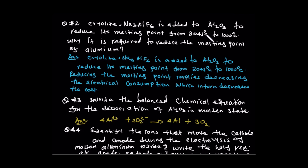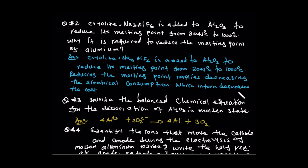Like in the extraction of aluminium, what is cryolite? Why is it required? To reduce the melting point of aluminium oxide. The answer is to reduce the melting point, which in turn decreases electrical consumption, which in turn decreases the cost.